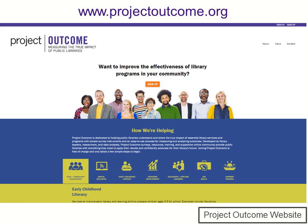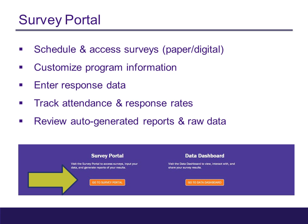This is the Project Outcome website, where you will access all of your surveys, tools, and resources. Registration and access are all free. The survey portal is where you go to schedule and access all of your surveys. You can customize your survey's program information including program name and date, enter all survey responses, track program attendance and survey response rates, and review your auto-generated reports and data. We recommend starting small with a program you feel confident about getting patron feedback from.